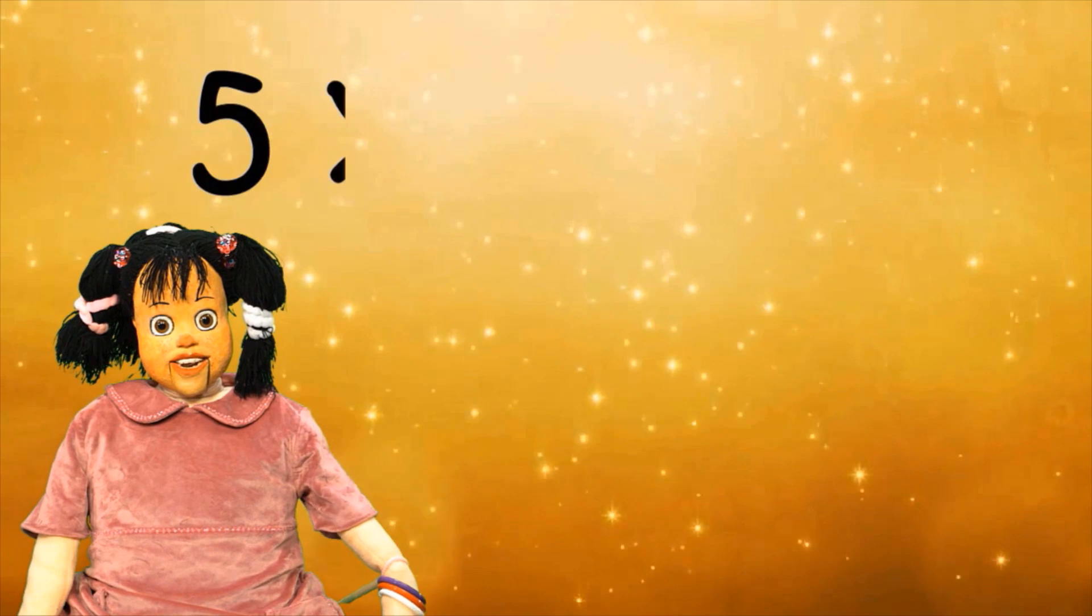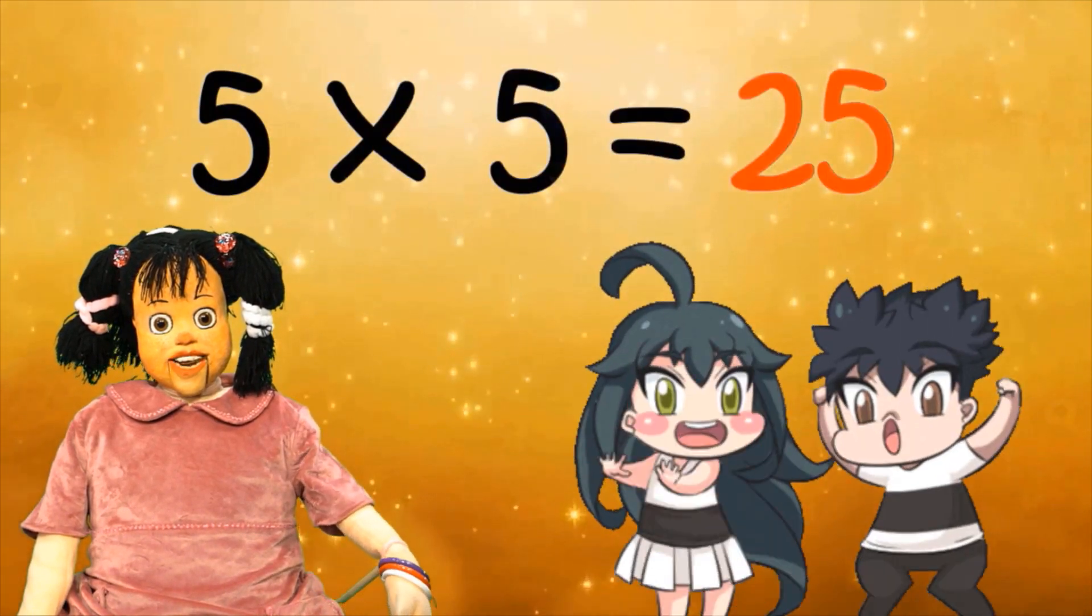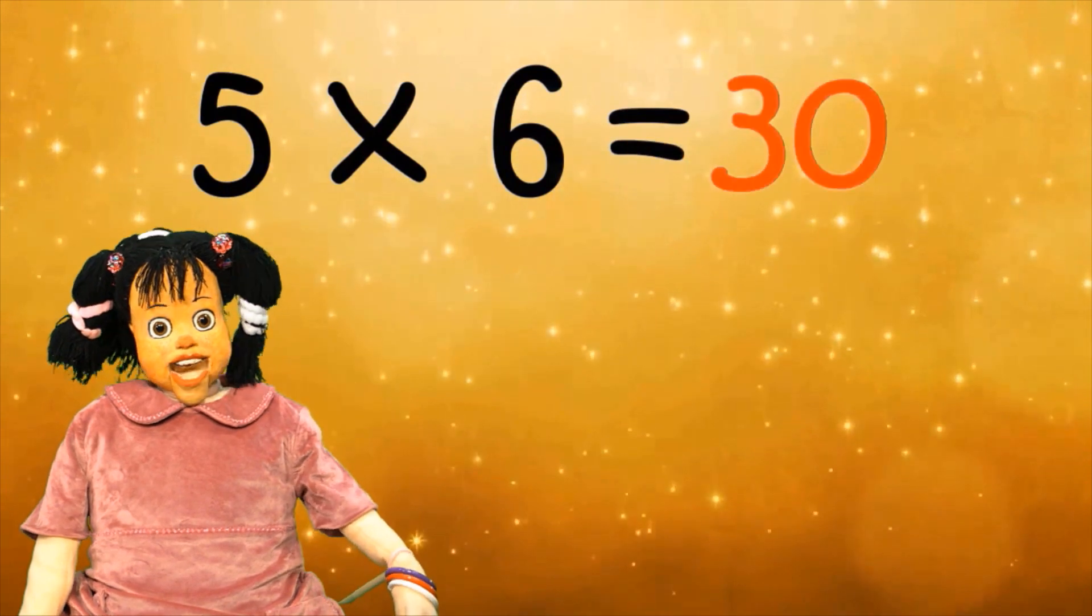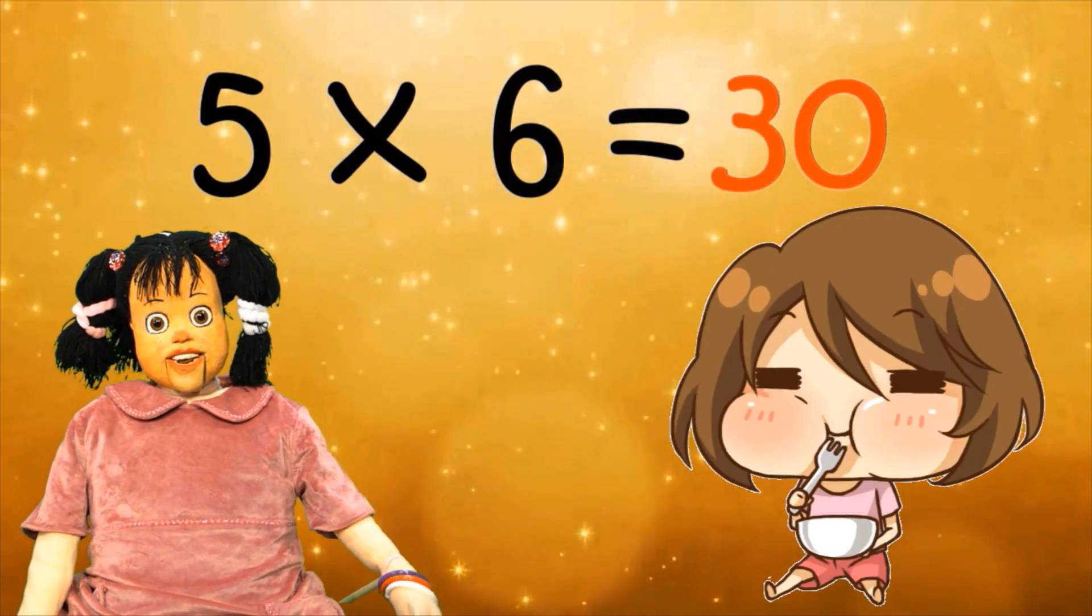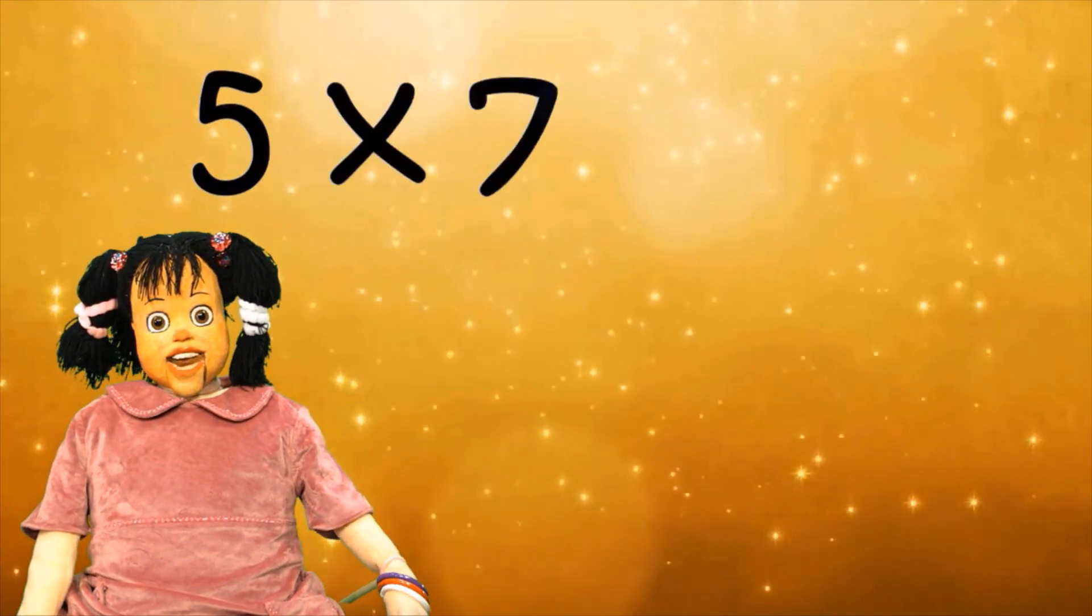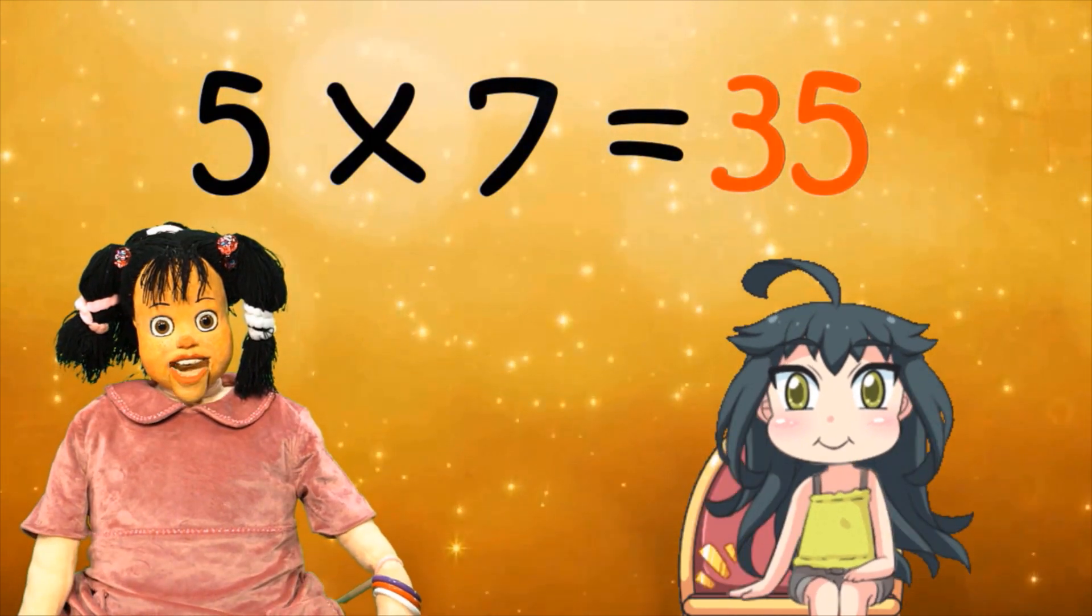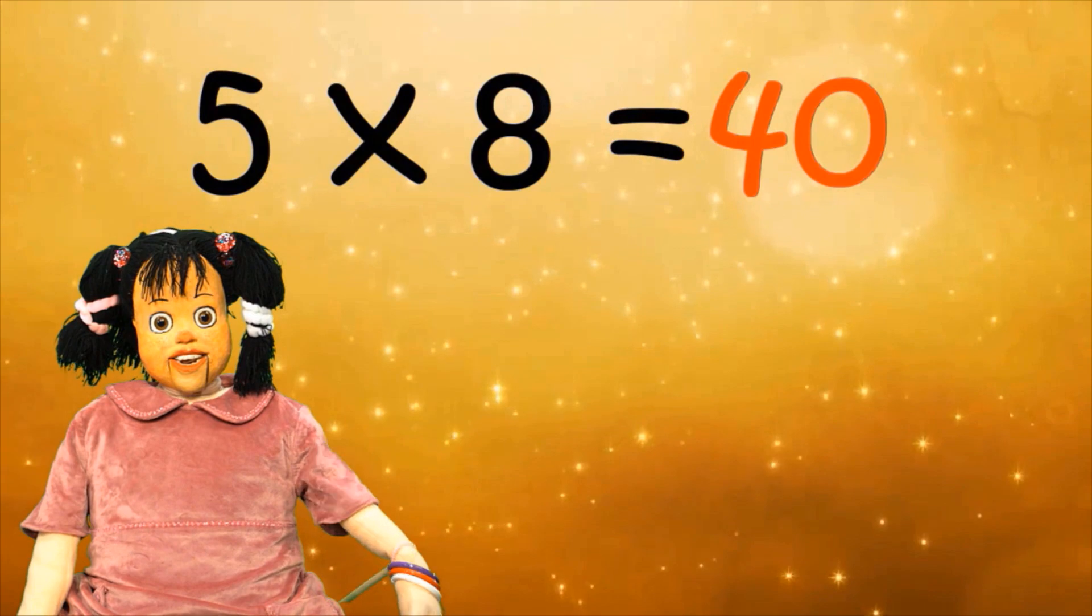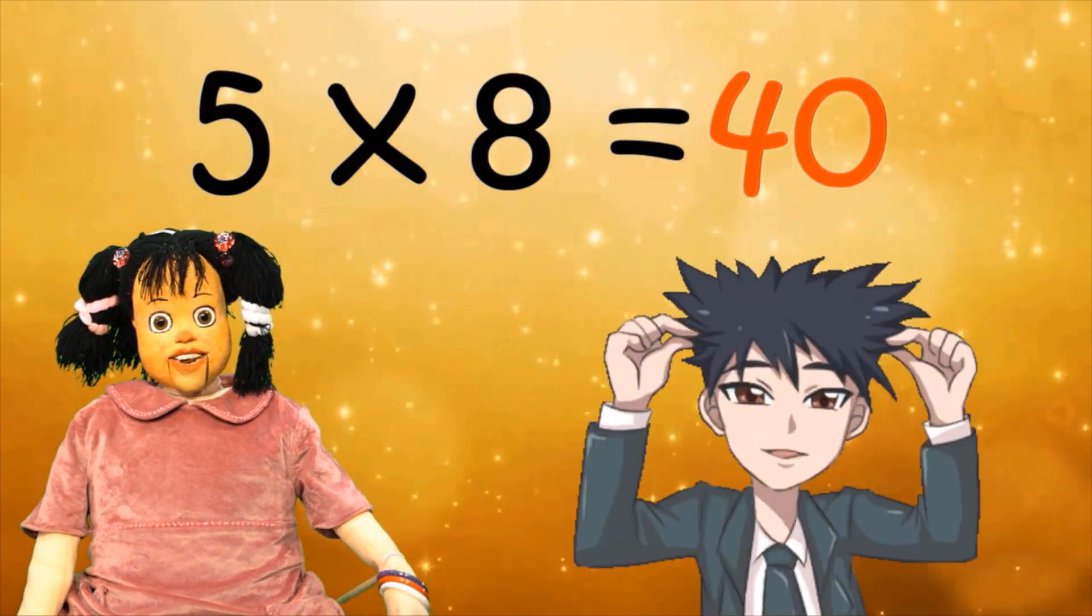5 times 5 equals 25, çocuklara her şey beleş. 5 times 6 equals 30, biz yemeyiz 9. 5 times 7 equals 35, nerede kaldı bizim eş. 5 times 8 equals 40, haydi saçımı 40.